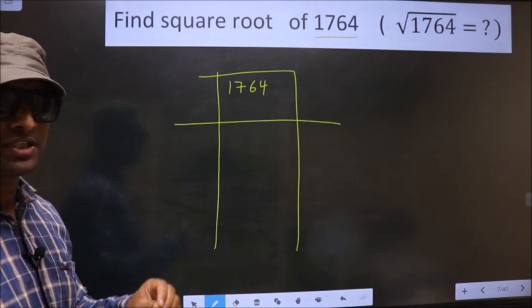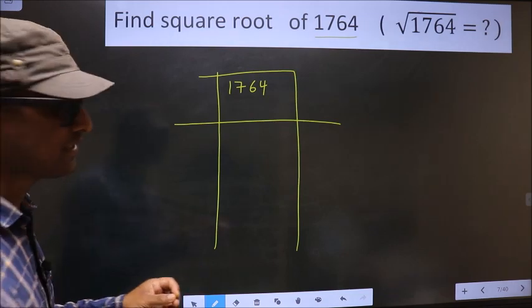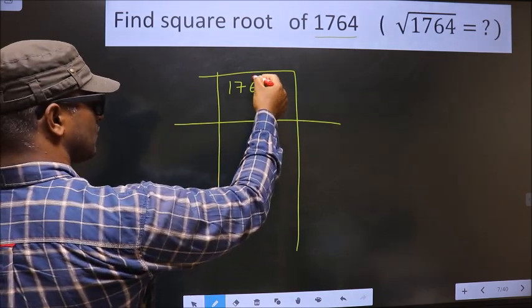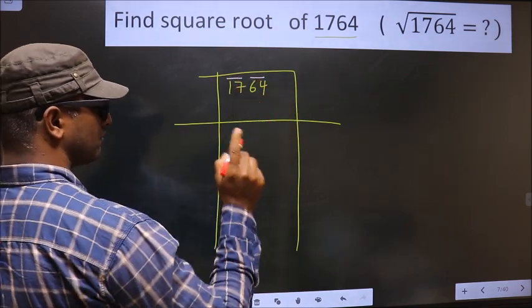Now we should divide the given number into pairs, that is starting from this side. These two numbers, one pair. And these two numbers, one pair.